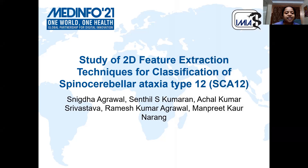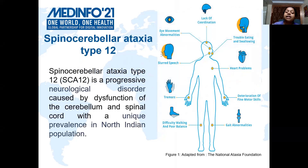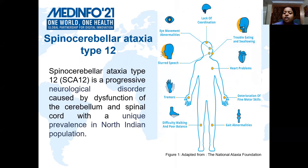Hello everyone. I am Snekta Agravadaside and I am here to present my paper, Study of 2D Feature-based Traction Technique for Classification of Spino-Cerebellar Ataxia Type 12. This is an immunological disorder caused by the dysfunction of the cerebellum and spinal cord, and it has a unique prevalence in North Indian population. On the right side of the slide, you can see the different symptoms which can be found in this disease.